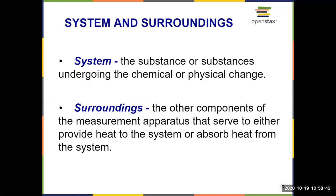The surroundings is everything else — the other components of the measurement apparatus, so the calorimeter itself is considered to be the surroundings. The calorimeter, as part of the surroundings, can either absorb heat from the system — so it's heating up, meaning our object is giving off heat — or it can serve to provide heat to the system. If our system is endothermic, it absorbs heat, meaning that has to come from the calorimeter, and our calorimeter would cool down, just like a chemical cold pack.